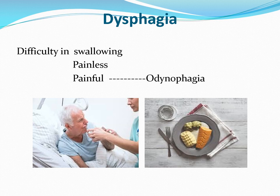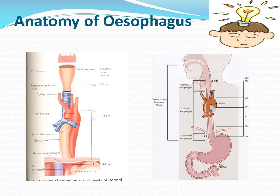Dysphagia can be painless or painful. If swallowing is painful, we call it odynophagia. The esophagus is 25 centimeters long, starting from the C6 cervical vertebra and ending at the level of T12, passing through the diaphragm at the level of T10.